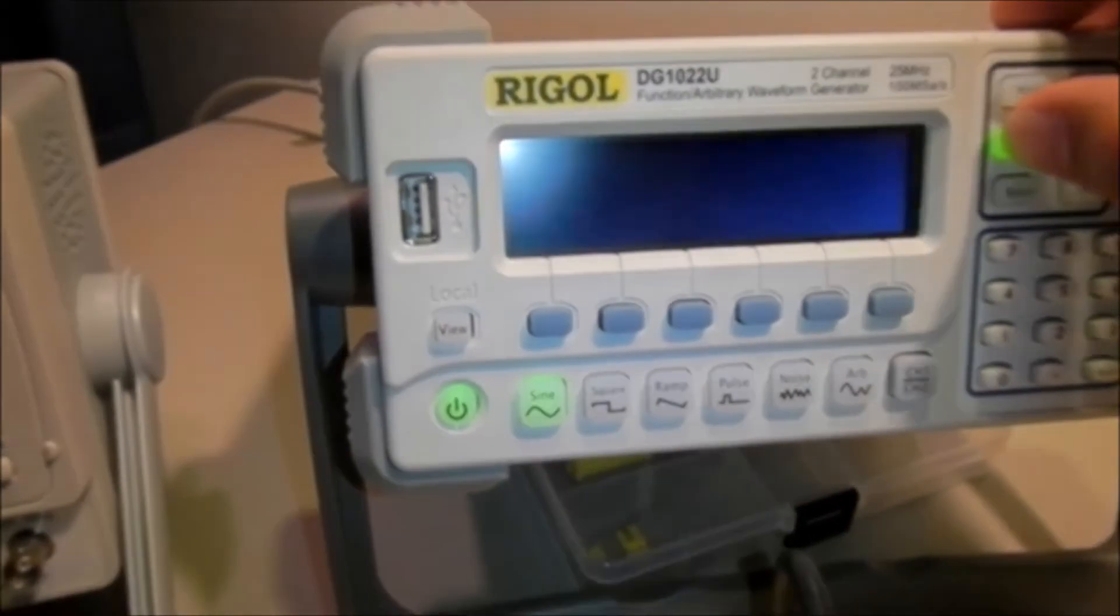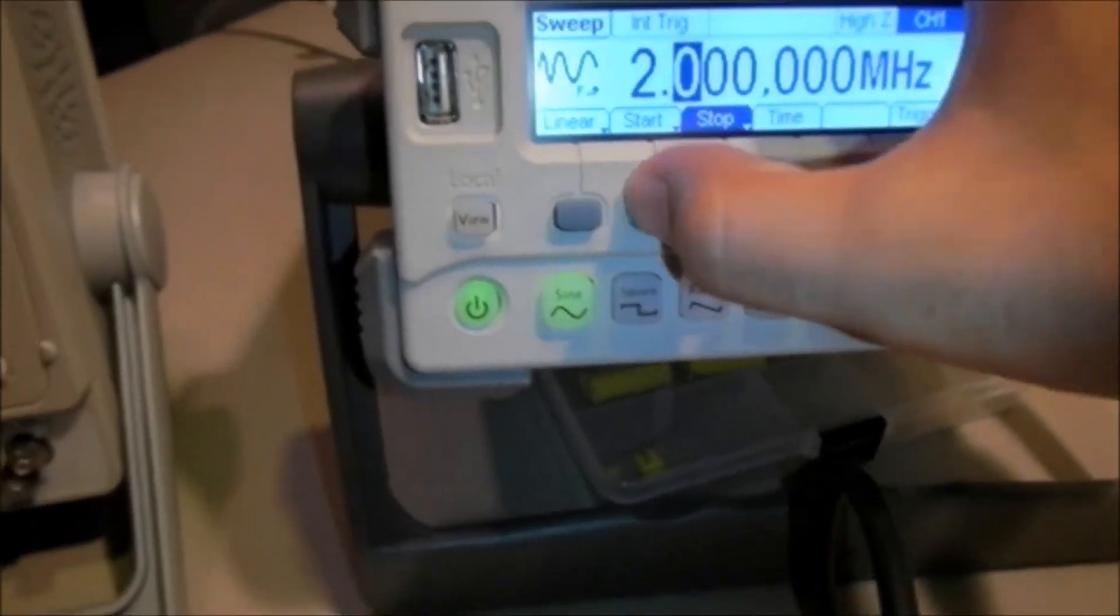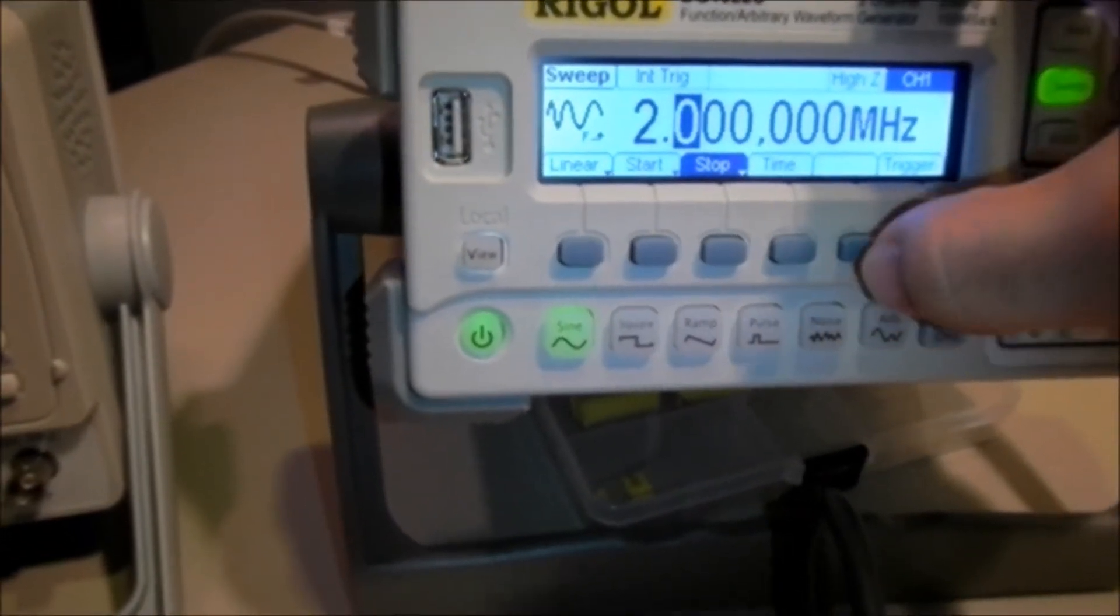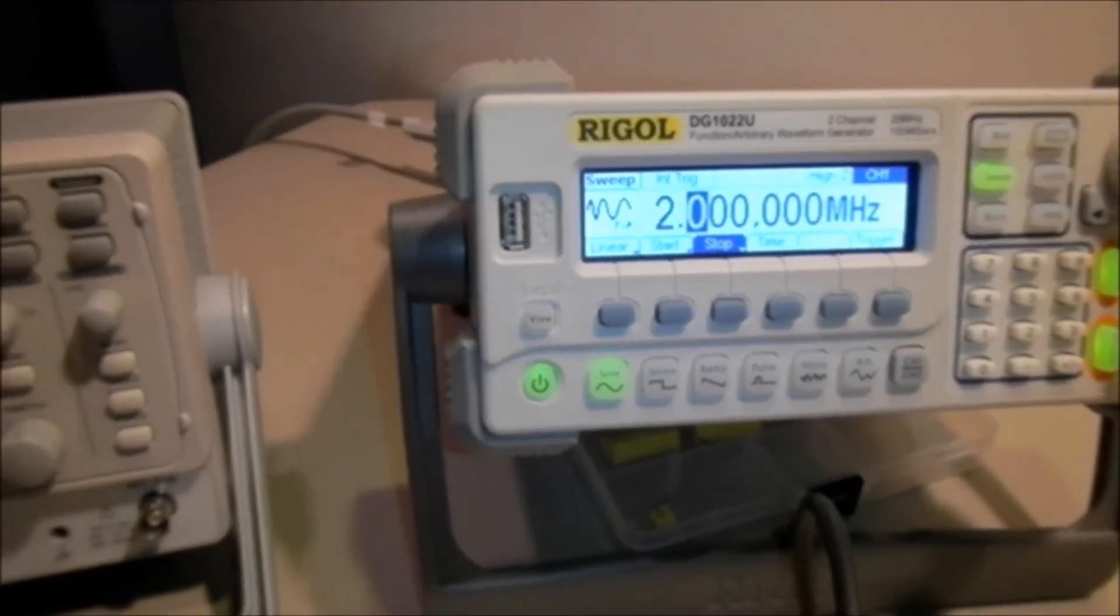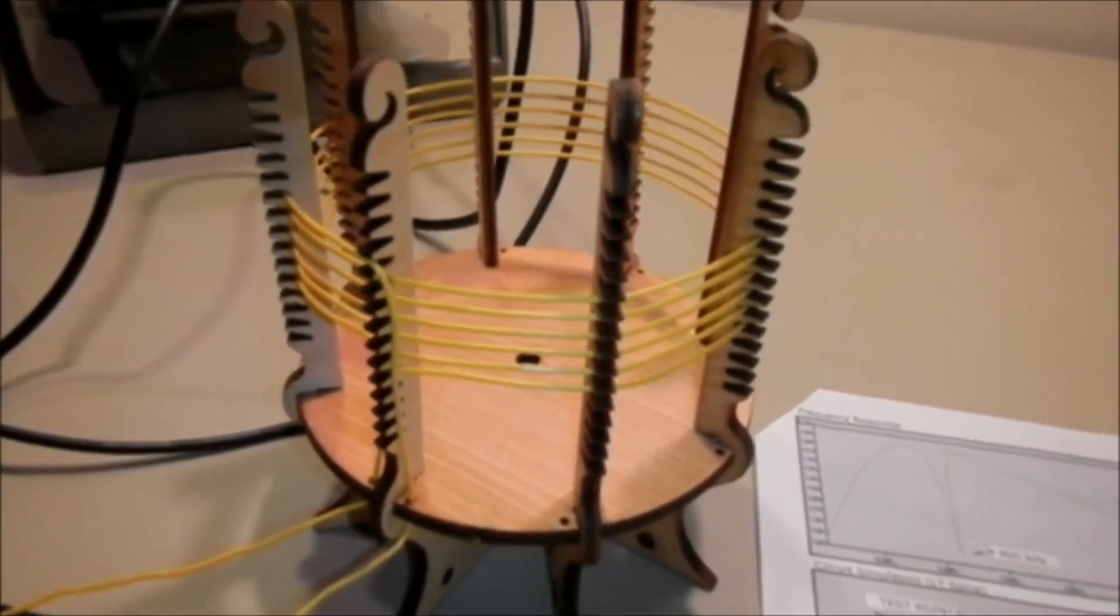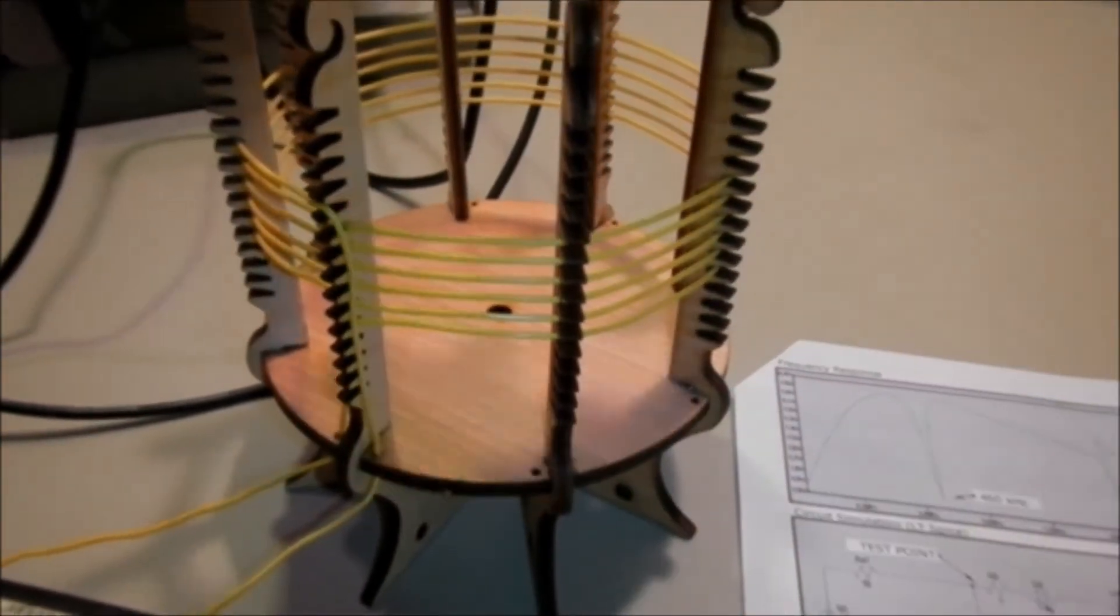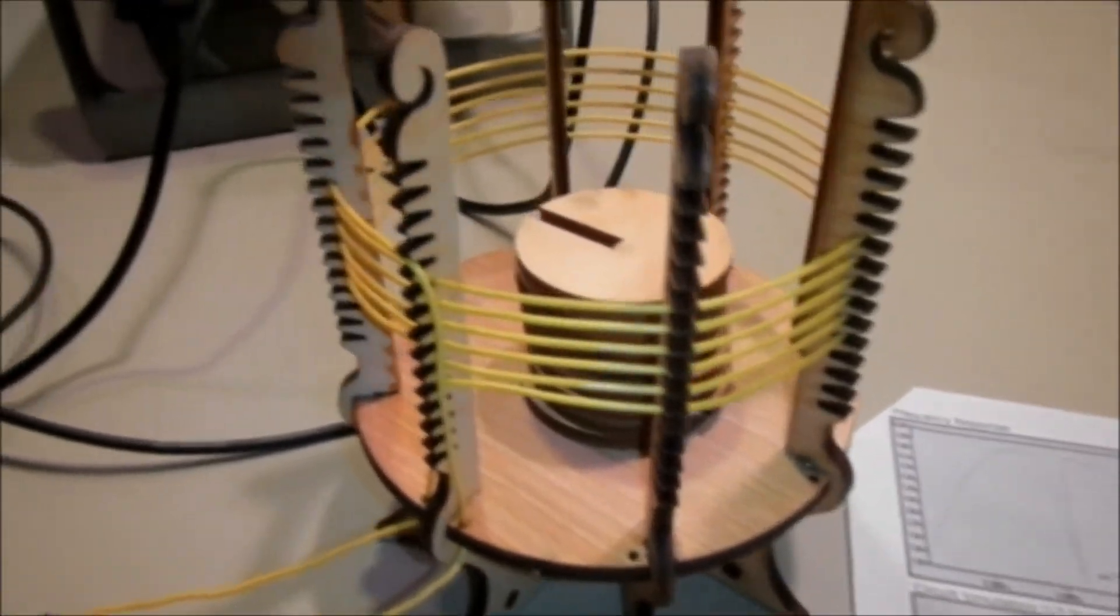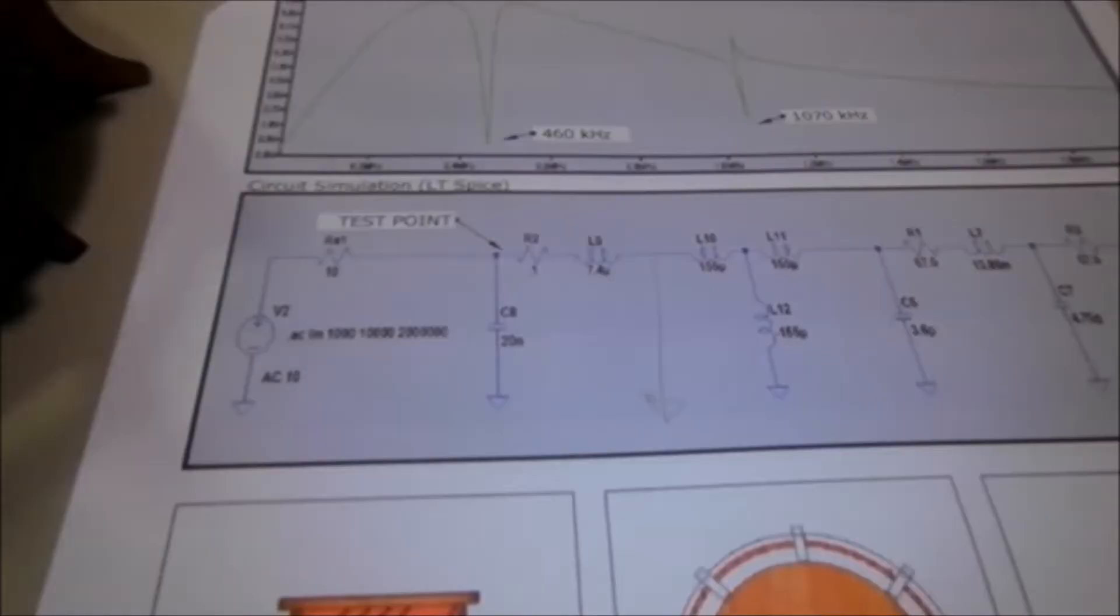Again, we're doing our sweep from 10 kilohertz to 2 megahertz. So now let's look at something interesting. We're going to insert our spacers for best coupling, and we're going to insert the secondary coil.